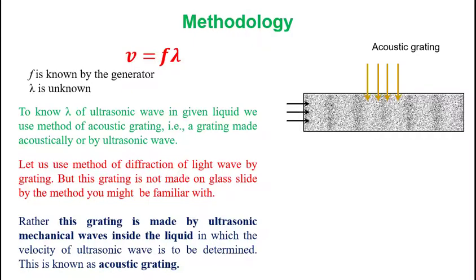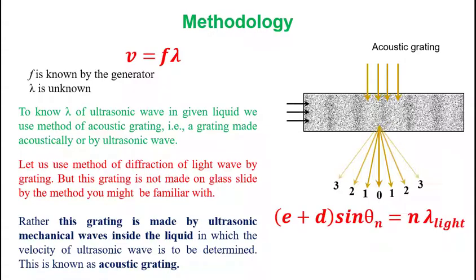If a monochromatic light incidents on a grating, the light suffers diffraction. This is zeroth order diffracted light. This is first order, second order and third order diffraction maxima of the light. The angle of diffraction is related with the wavelength of light and grating element by this formula. Here n is the order of diffraction. What we need to do is we find angle of diffractions, put the values of diffraction angle, order of diffraction and wavelength of light used in this formula and find the wavelength of ultrasonic wave. This when multiplied with the frequency of ultrasonic wave will give you the velocity of ultrasonic wave in given liquid.